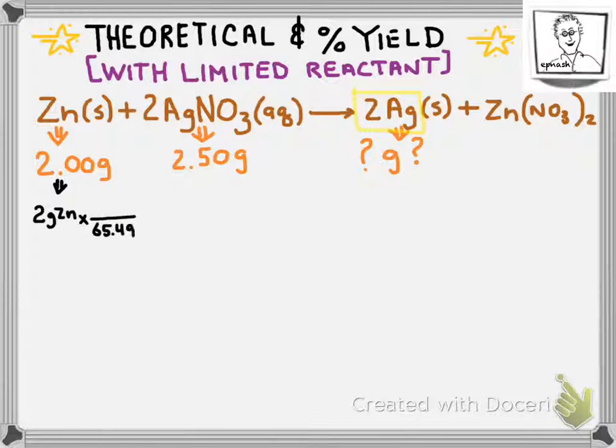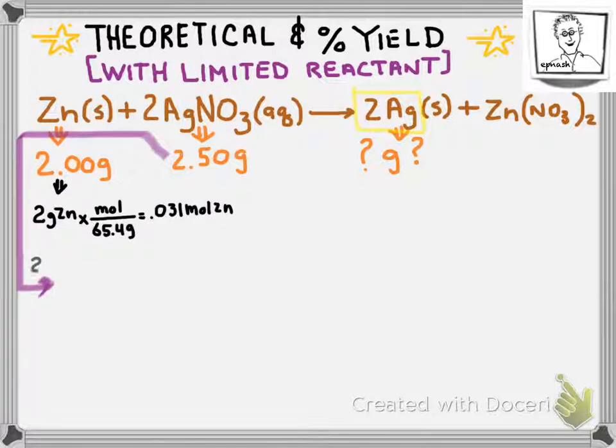That's also called the theoretical yield of the silver. So the first thing we have to do in this case is because we're given information about both reactants, we need to convert the grams of each of these reactants to moles.